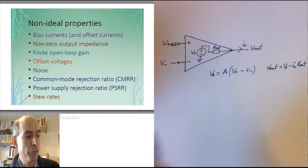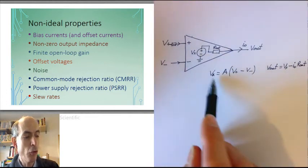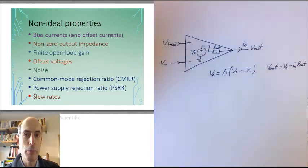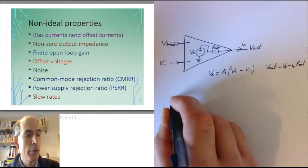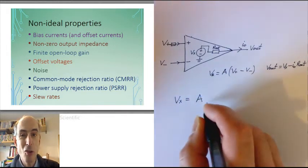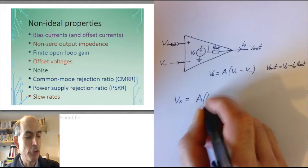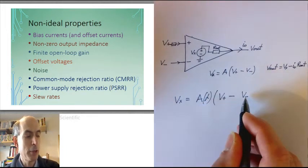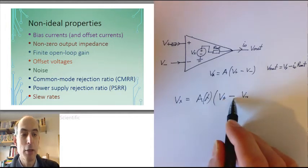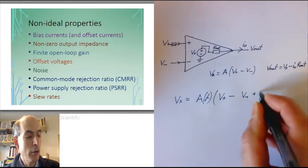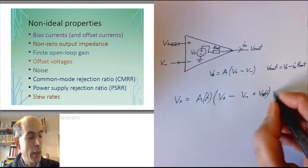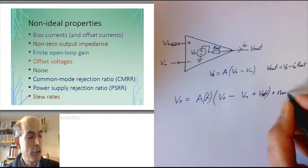And for real op-amps, Vx is not just a function of the difference between the voltages on its two inputs. For a real op-amp, Vx would be something like the open loop gain, which is not infinite and is a function of frequency, times V plus minus V minus, the non-inverting input minus the inverting input, plus an offset voltage. And it would also include an amount of noise added by the op-amp.